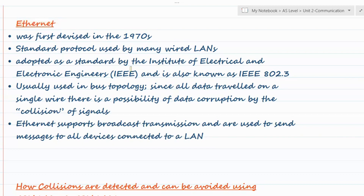Ethernet is also adopted by the Institute of Electrical and Electronic Engineers, IEEE, and the standard is IEEE 802.3 for Ethernet. This is another name for it: IEEE 802.3. Normally this is used in bus topology, because all data travels through the central cable.